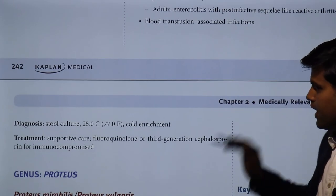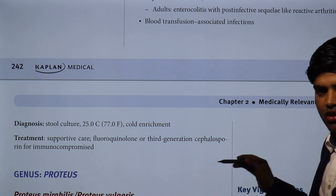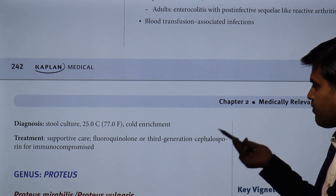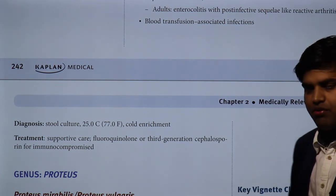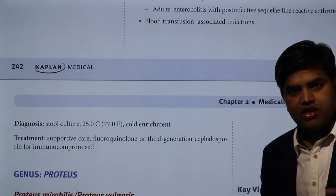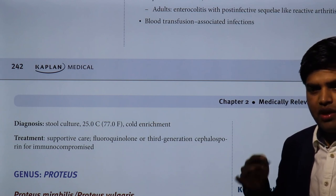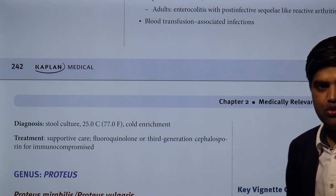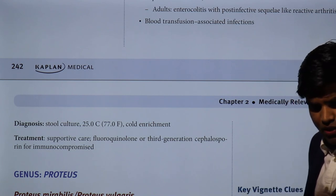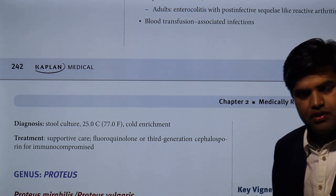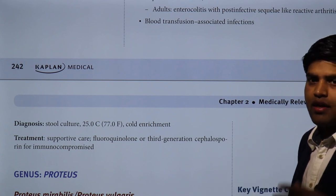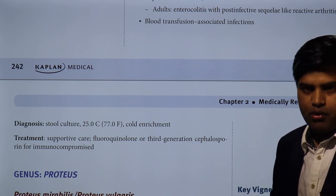Diagnosis of Yersinia enterocolitica is straightforward since it is not hazardous - culture can be performed easily at low temperature via cold enrichment. Treatment is supportive care; fluoroquinolones or third-generation cephalosporins are used for immunocompromised patients. In summary, Yersinia pestis is a disease of great concern as a bioterrorism and biological warfare agent that can cause devastating outbreaks if not controlled, while Yersinia enterocolitica causes enterocolitis across different age groups.